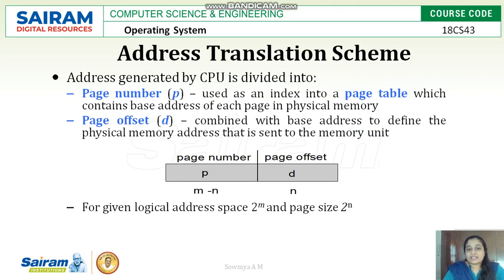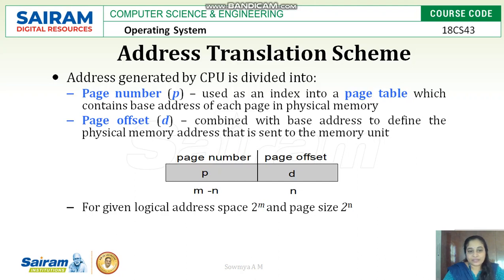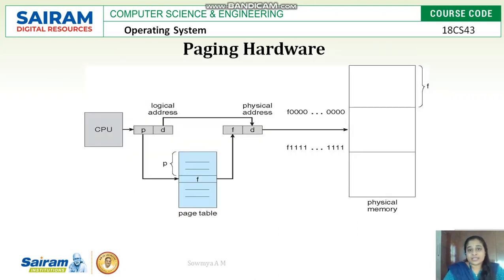Address translation for paging happens with a page number and page offset value. The page number is used as an index into a page table, which contains the base address of each page in physical memory. The offset is combined with the base address to define the physical memory address. For a given logical address space of 2 power m, the page size will be 2 power n. This is how paging hardware looks — it contains a page table.